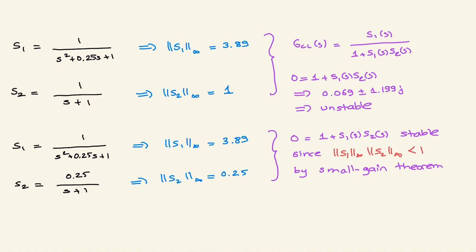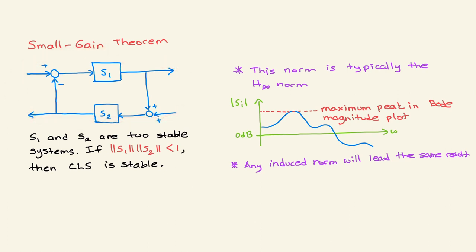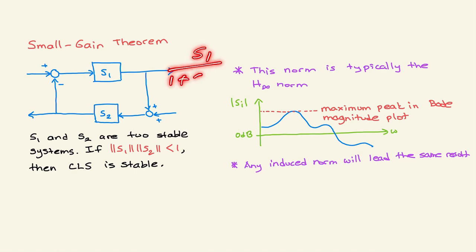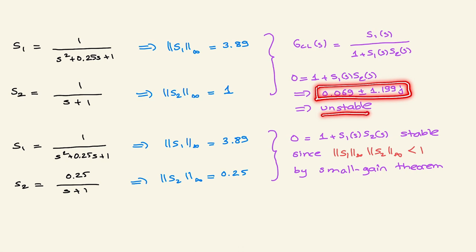Since this is a sufficient condition, you can verify this by finding the closed-loop transfer function. The closed-loop transfer function is S1 divided by (1 + S1·S2). If you set the denominator to zero to find closed-loop poles, you will find that one or two poles are in the right half plane, hence the closed-loop system is unstable — consistent with the small gain theorem since the product is not less than one.